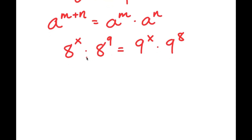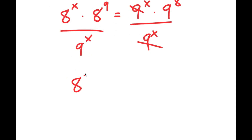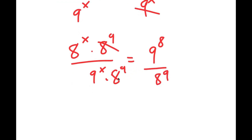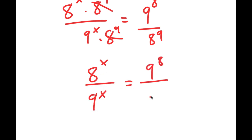From here I'm going to divide both sides by 9 to the power of x. The right-hand side terms cancel and I get 8 to the power of x times 8 to the power of 9, over 9 to the power of x, equals 9 to the power of 8. Now I'm going to divide both sides by 8 to the power of 9. So I get 8 to the power of x over 9 to the power of x equals 9 to the power of 8 over 8 to the power of 9.